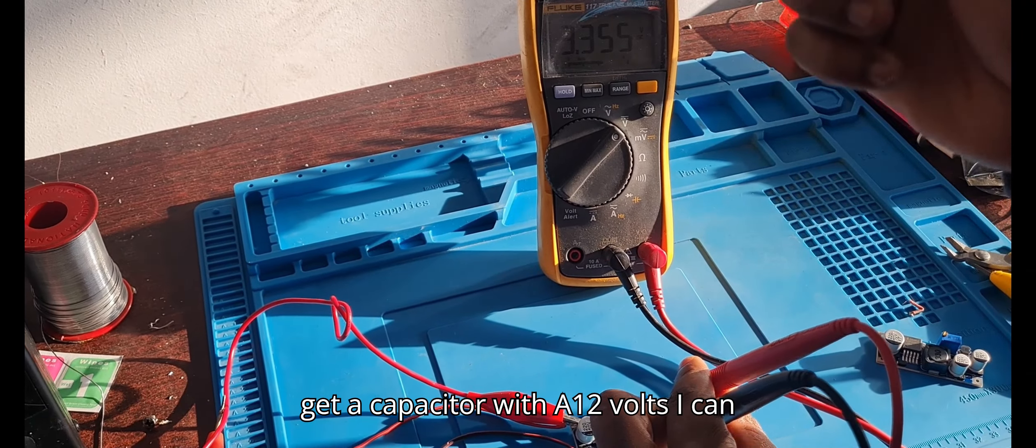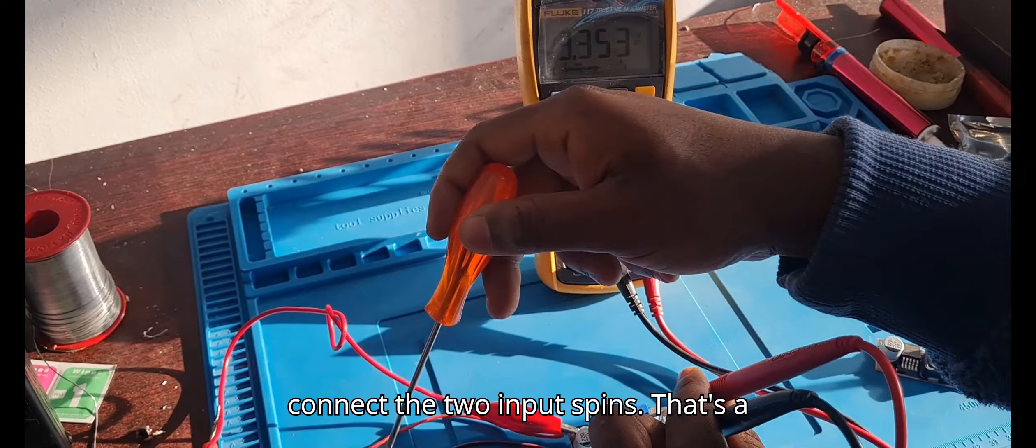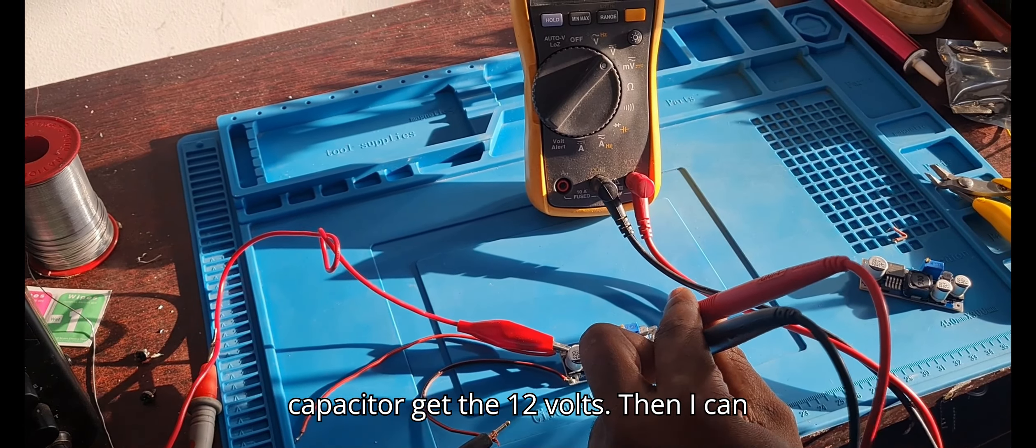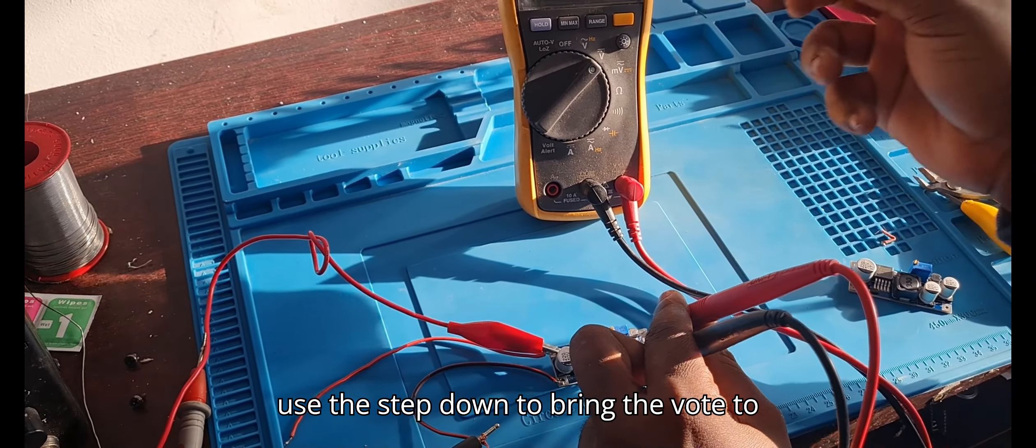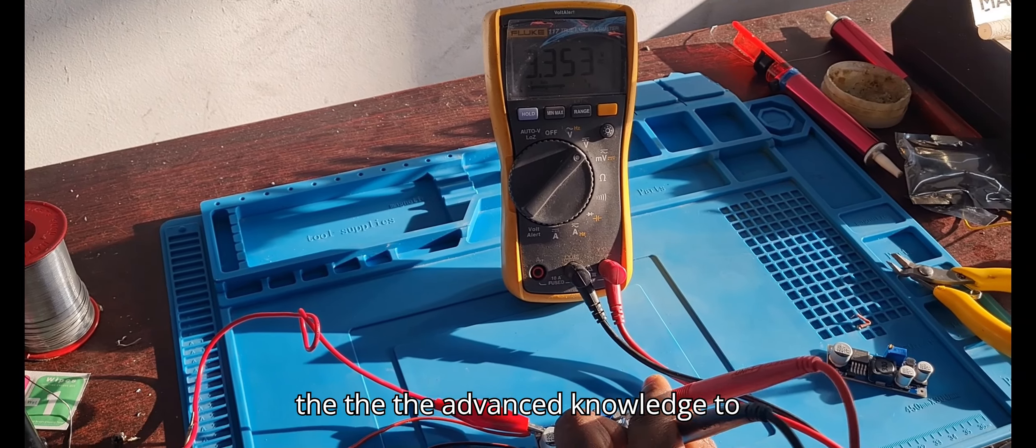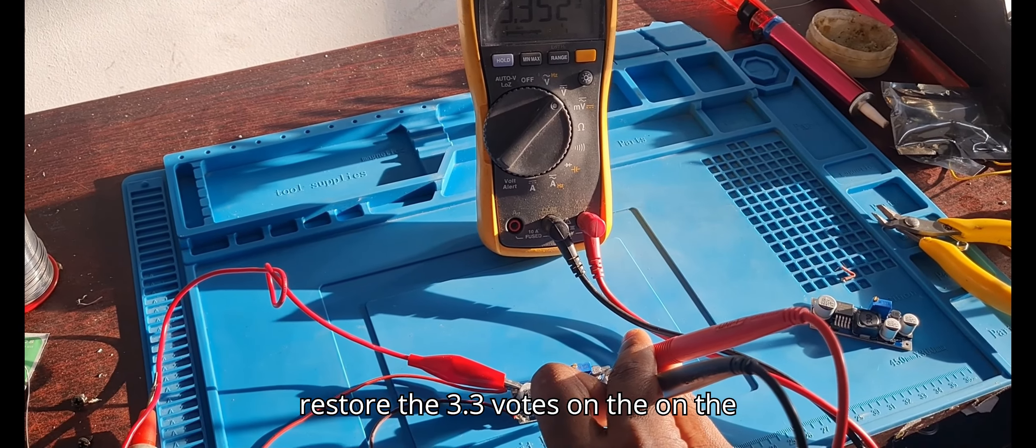So if I'm shooting for 3.3 volts, for example on a TV, if I have a capacitor with twelve volts, I can connect the two input pins, positive and negative, from that twelve volt capacitor. Then I can use a step down to bring it to 3.3 volts where it's missing, if I don't have the advanced knowledge to restore the 3.3 volts on the board.